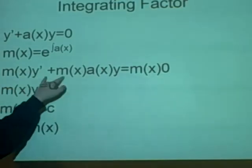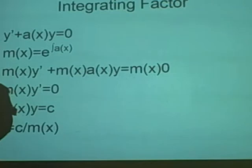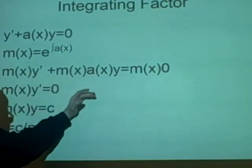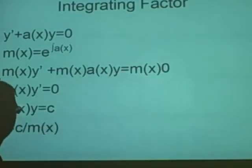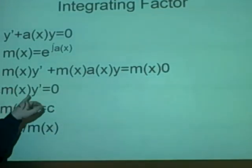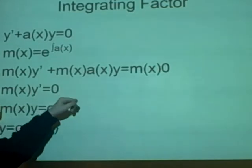By looking at this we can tell that both of these could be zero. If both of these are zero then this is true, isn't it? So, what I've done, I've got m(x)y prime equals zero.